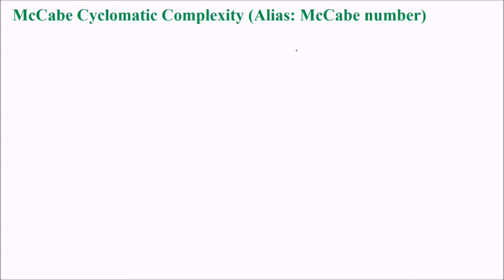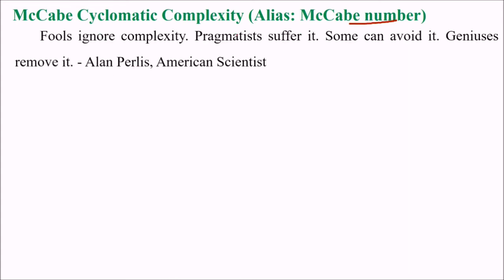McCabe cyclomatic complexity, which is also known as the McCabe number. This complexity is very important because, as said by Alan Perlis, fools ignore complexity, pragmatists suffer this complexity, some can avoid it, but the genius is they remove this complexity.